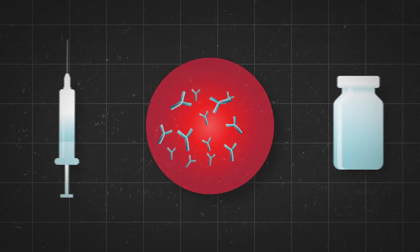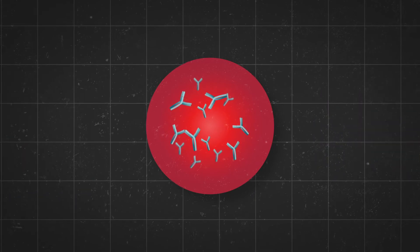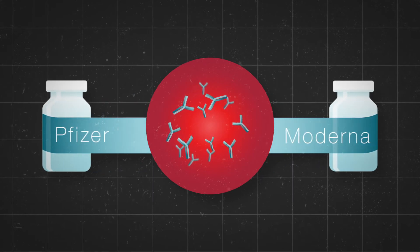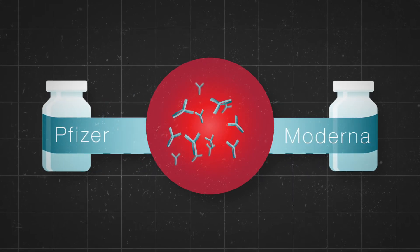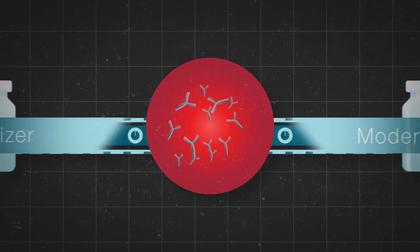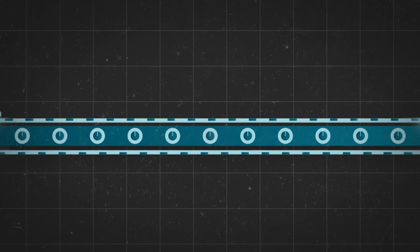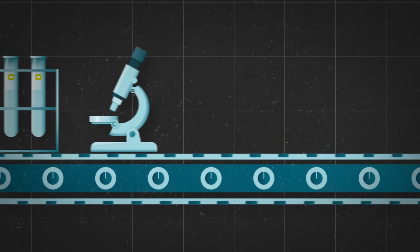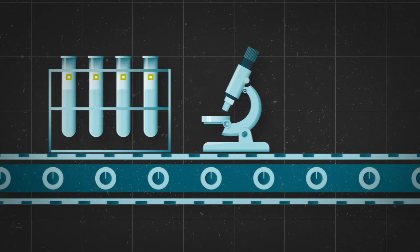A safer method was needed, quickly. The breakthrough came from two companies. Pfizer and Moderna both turned away from the usual method of triggering immune response. Instead, they looked at mRNA to deliver spike protein instructions without ever infecting the patient with SARS-CoV-2.